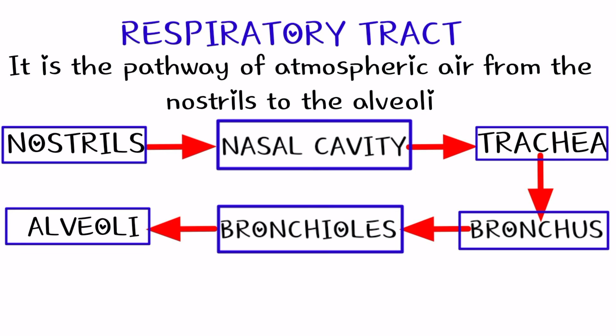The respiratory tract is the pathway of atmospheric air from the nostril to the alveoli. First, air enters through the nostril — that is the opening. Then to the nasal cavity, then to the trachea, then to the bronchus — which are branches of the trachea that enter the lungs — then to the bronchioles, which are the terminal branches of the bronchus, and finally to the alveoli, the air sacs seen at the tip of the bronchioles. The exchange of gas takes place there.